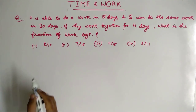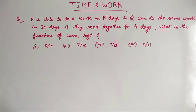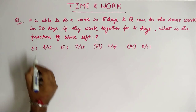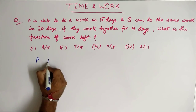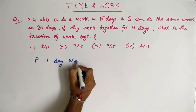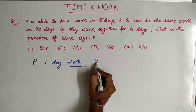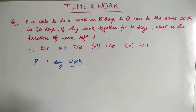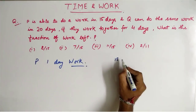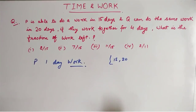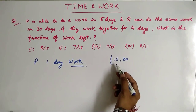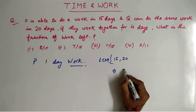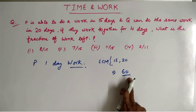P is able to do it in 15 days and Q can do it in 20 days. If we go by the traditional method, P's one day work will come like 1 by 15, going into fractions. To avoid these fractions, we will take the LCM of 15 and 20 — the number of days required by P and Q respectively. We will assume the total work to be the LCM of 15 and 20, which comes out to be 60. So our total work we will assume to be 60.